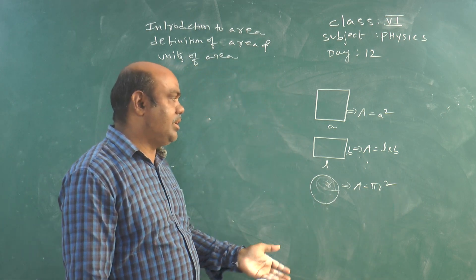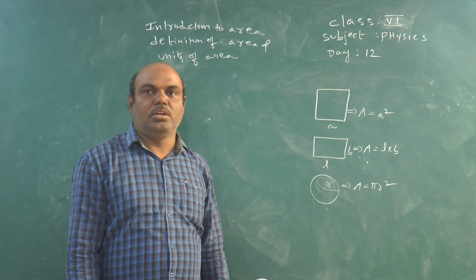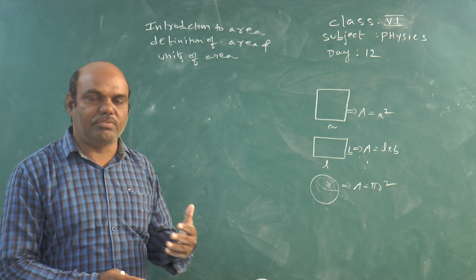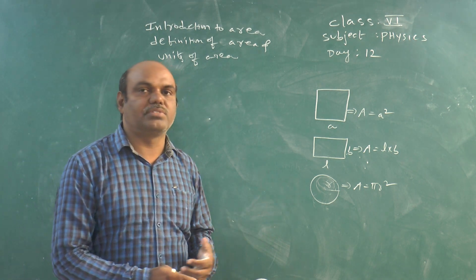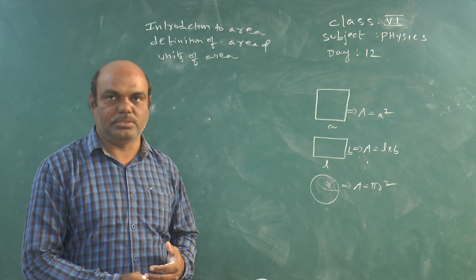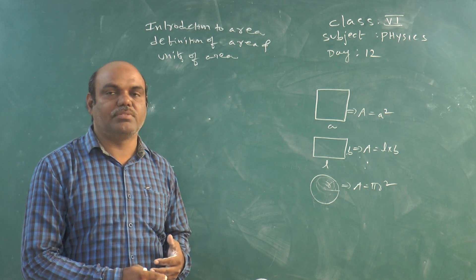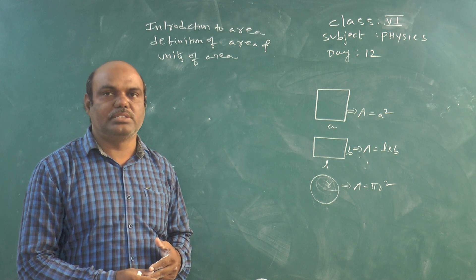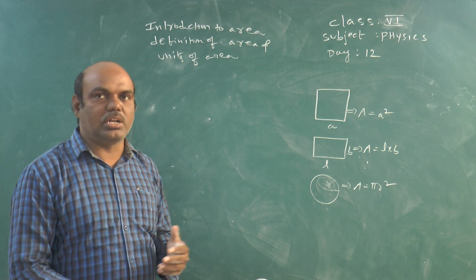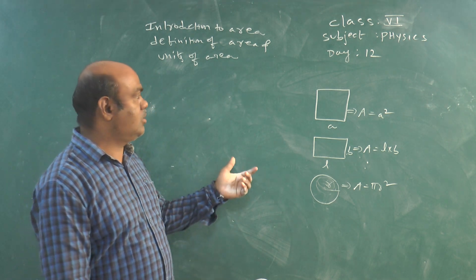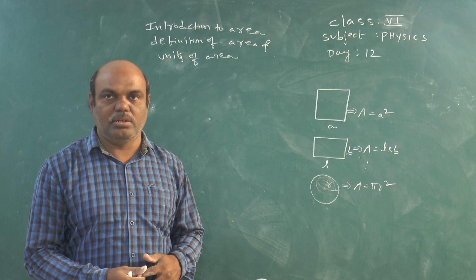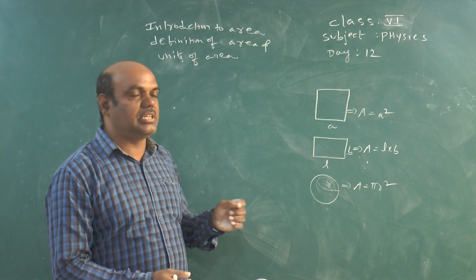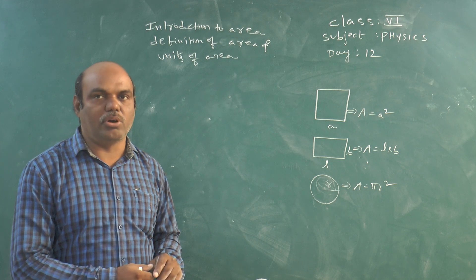So like that we can calculate the area of the surface occupied by different regular shapes of bodies. For irregular shapes of bodies, we use a graph paper to measure the area. So area is nothing but the surface occupied by a body.